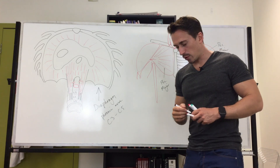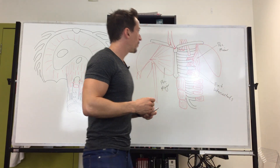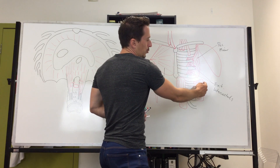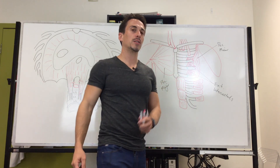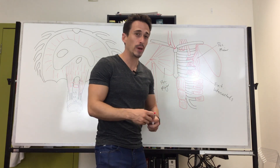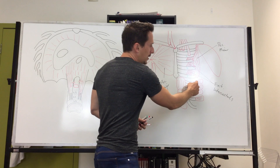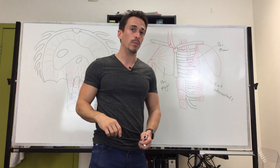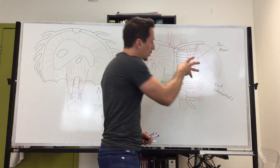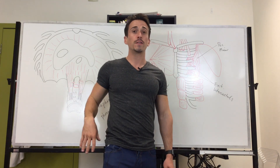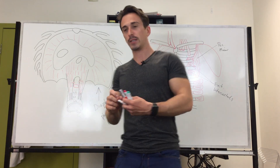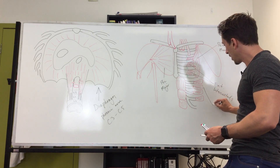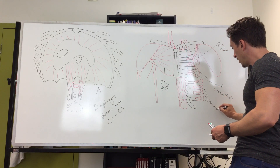The serratus anterior muscles are also involved in forced inspiration. These muscles attach to the ends of the ribs, and when they contract they shift the ribs, increasing thoracic volume.